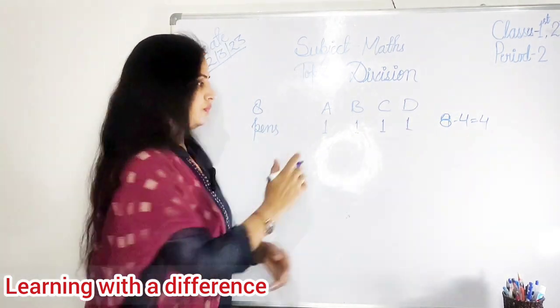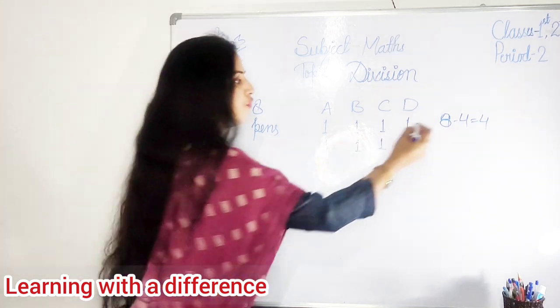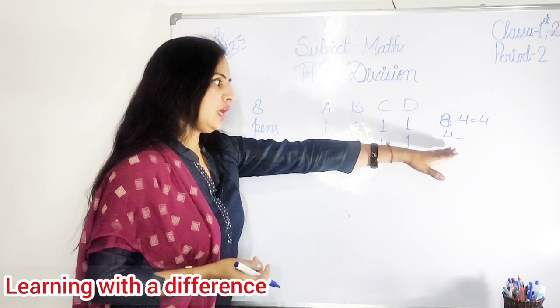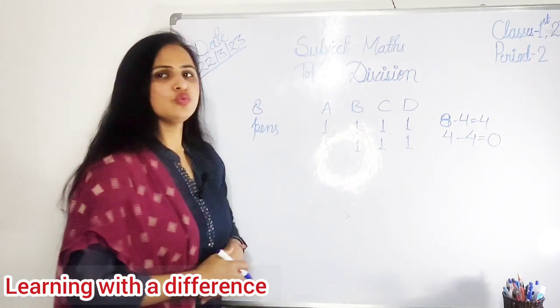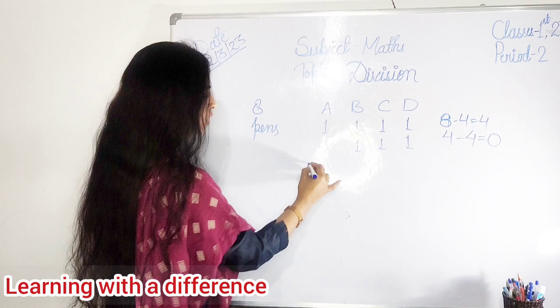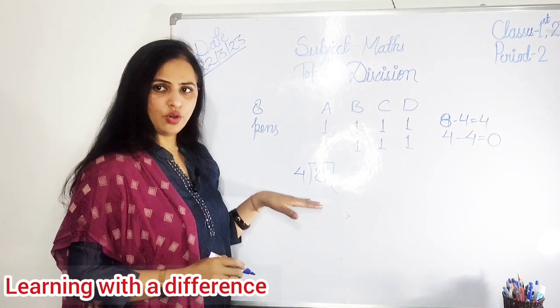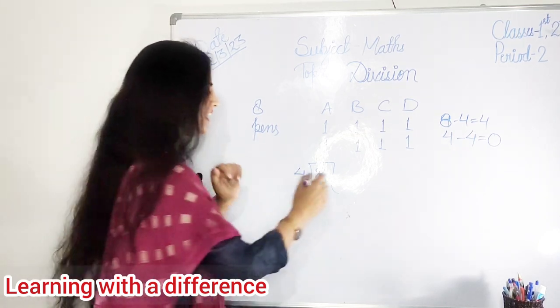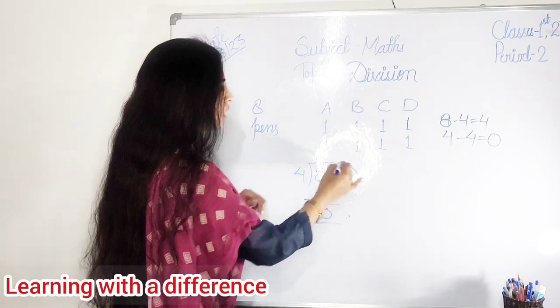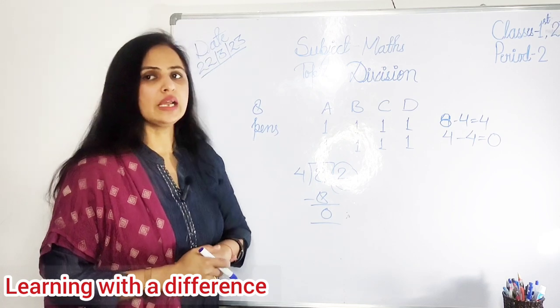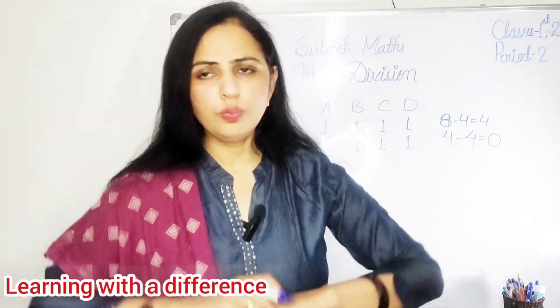Again four pens ko hamne phir se divide kiya. One to A, B ko ban diya, C ko ban diya, and D ko ban diya. Abhi four bache the left mein se. One, two, three, four we already given. Four minus four, it is zero. So it is eight. Eight pens ko hamne kitni people mein divide kiya hai? How many people are there? One, two, three, four. Then we will divide eight by four. Four ones are four, four twos are eight. Very good. I will subtract this. Eight minus eight is zero. So two times hamne pens ko equally distribute kiya hai. Clear ho gaya? So this is the answer. Is there any problem? You may ask. No problem?